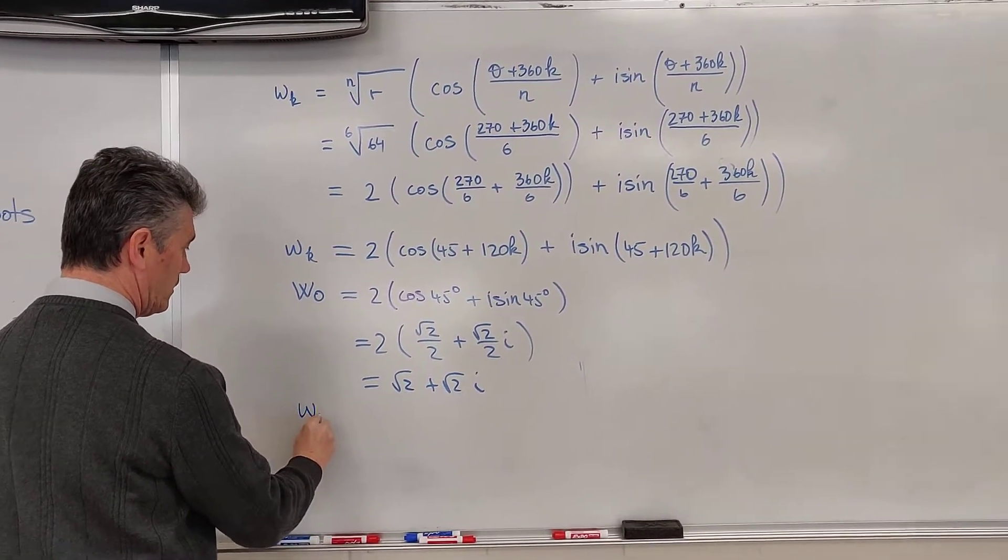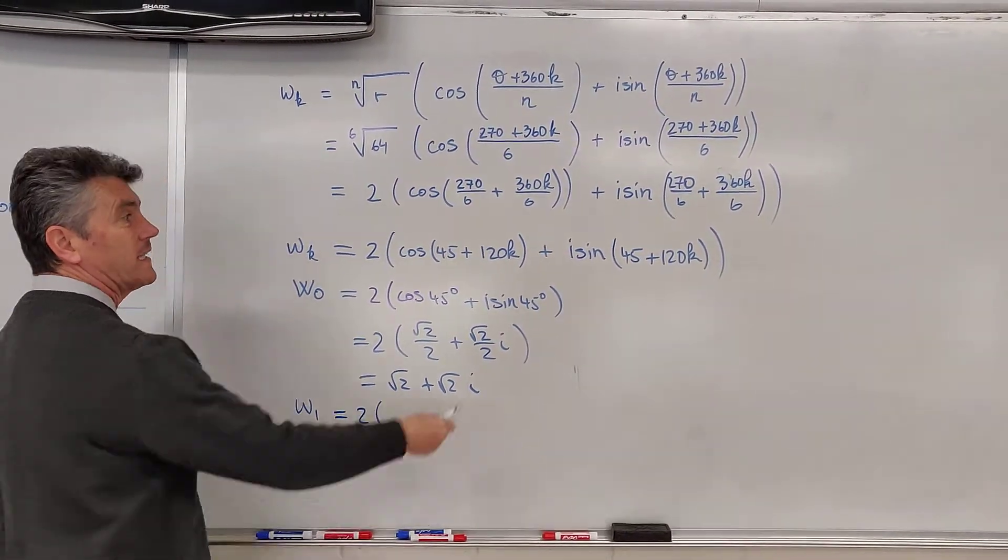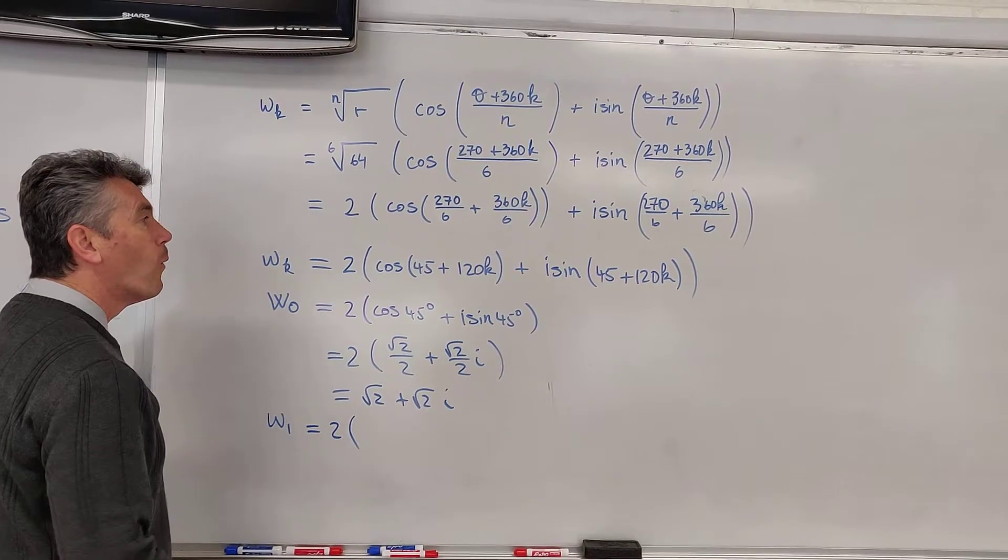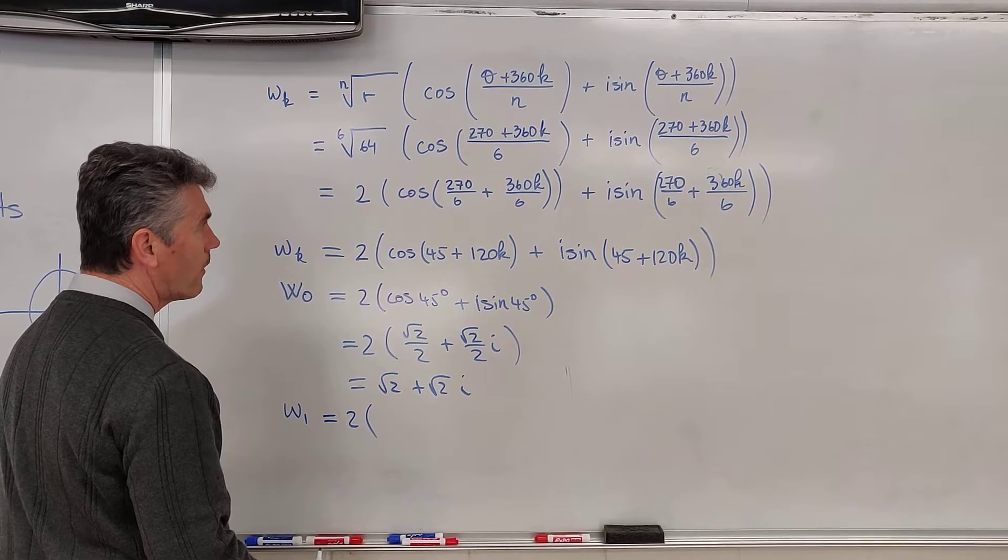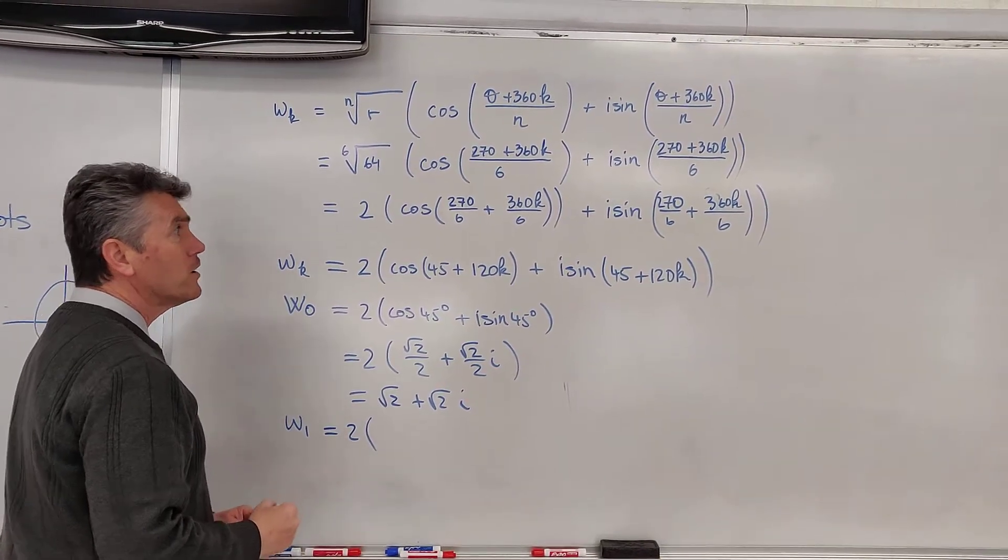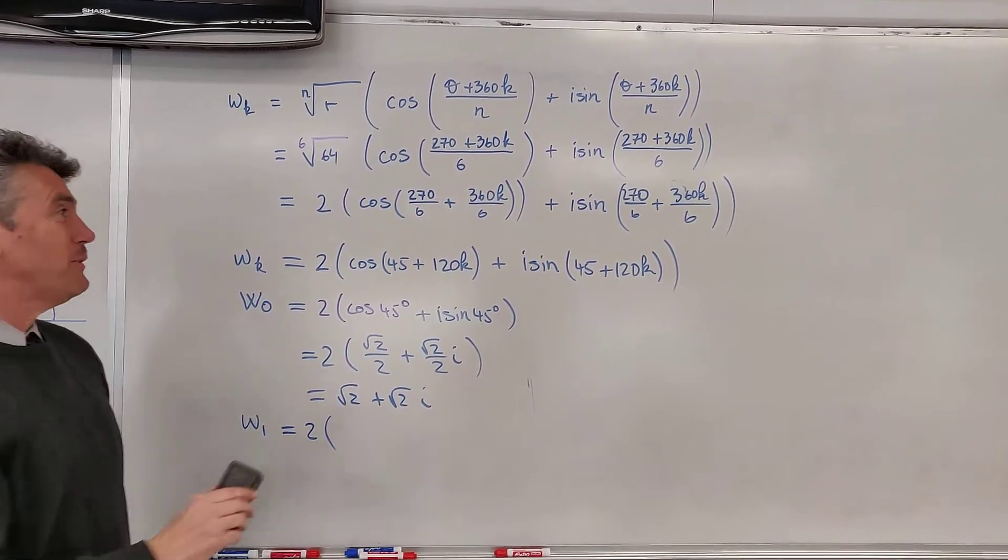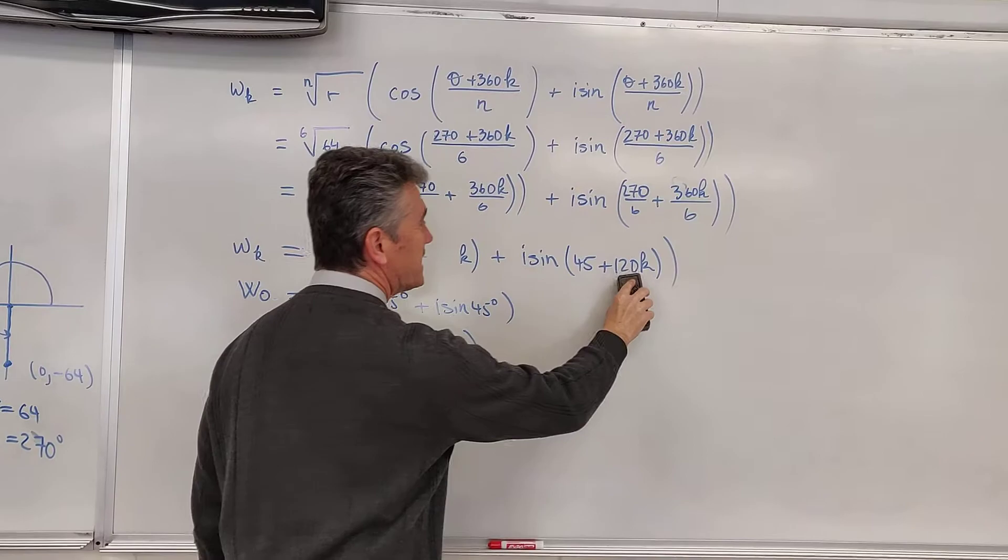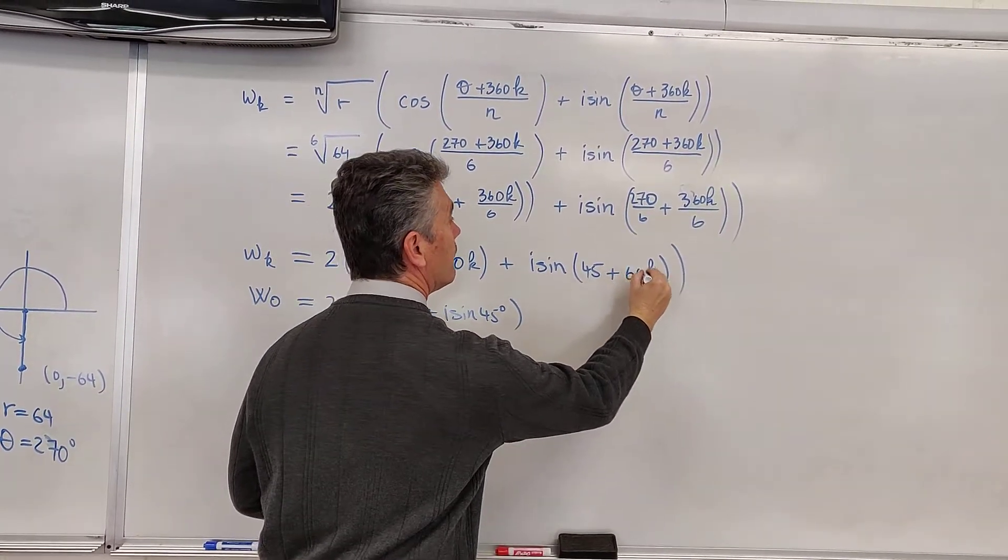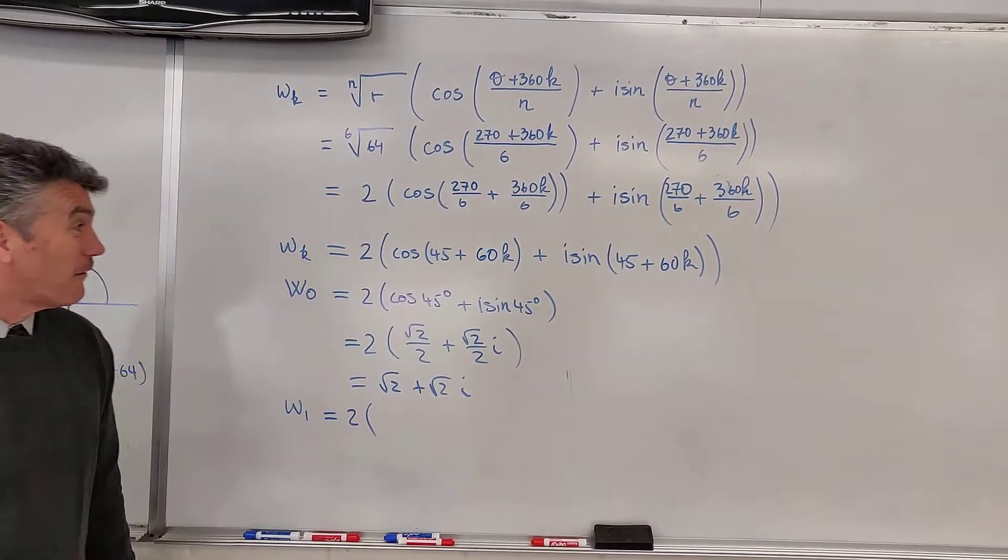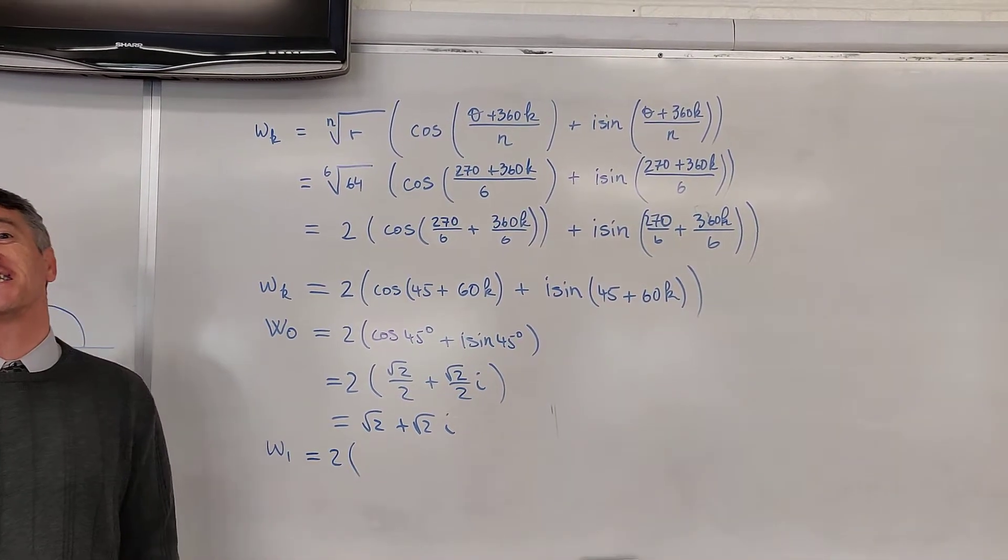W sub 1. W sub 1 is equal to 2. Now, we replace k by 1. Oh boy. 360 divided by 6 happens to not be 120. It happens to be 60. Isn't that great? Lucky for us, for the first one, no harm was done, because 120 times 0 is 0. So, it's 60 times 0.